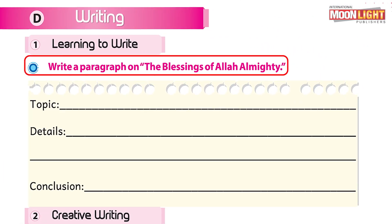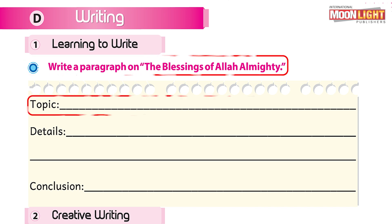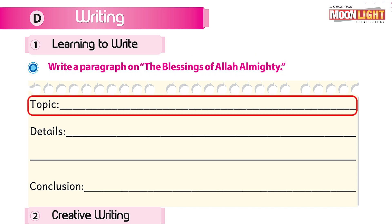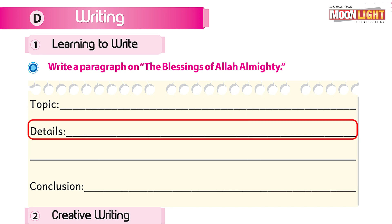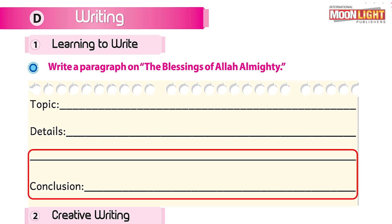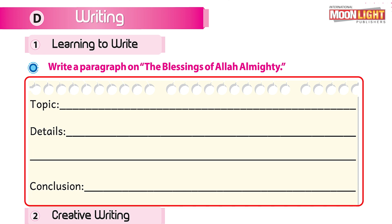Our writing topic is: write a paragraph on the blessings of Allah the Almighty. You can see that they have given you a sample for writing the paragraph. First of all, you are going to write a topic sentence, then supporting details, and the last sentence will be the concluding sentence.